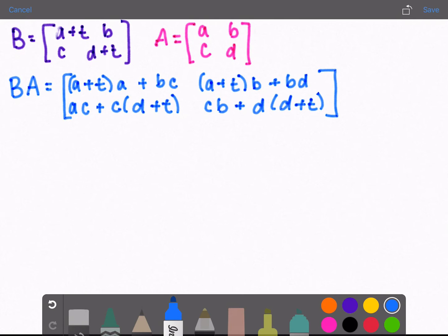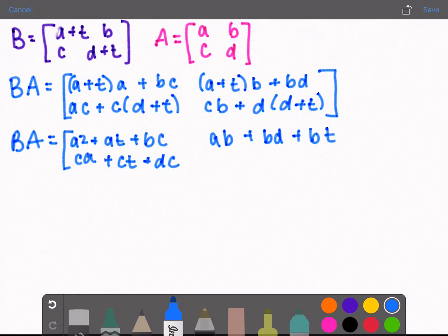And let's simplify this. I'm going to distribute and move some terms around, and you'll see why in a second. So I'll simplify this to make it A squared plus At plus BC, AB plus BD plus Bt, CA plus Ct plus DC, CB plus D squared plus Dt.